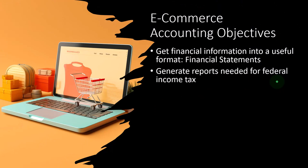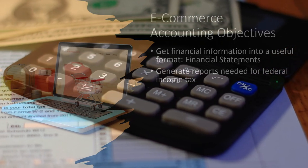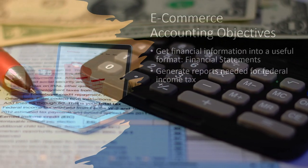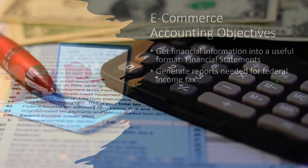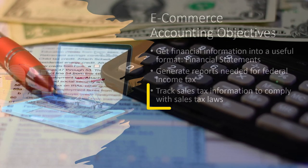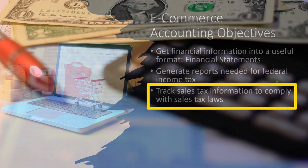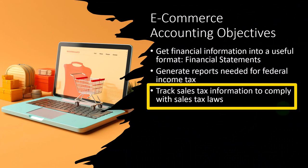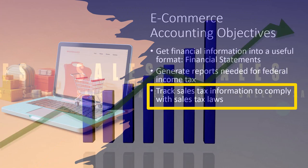From an accounting perspective, if you're using software you usually have a lot more accuracy because you'll be using the double-entry accounting system, and you'll be able to generate both the balance sheet and the income statement. That's usually a lot more accurate than just trying to create a Schedule C without a balance sheet. You can also track sales tax information to comply with sales tax laws.